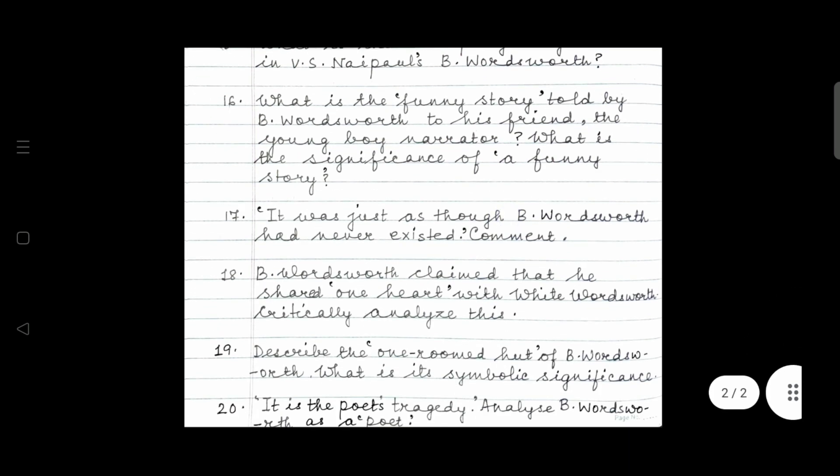This is the funny story and what is the significance of this story? If you watch all our videos, you will get an idea as to what to write in this answer. What is the significance of this funny story? What is B. Wordsworth trying to do by claiming that, by confessing that everything that he has said was untrue? Question seventeen. It was just as though B. Wordsworth had never existed. Comment on the ending. Comment on the ending of the short story, B. Wordsworth. The shattering of dreams and life of the boy after the death of his dear friend, B. Wordsworth.